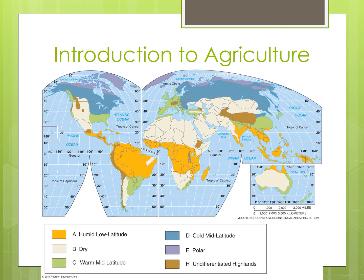Climates vary considerably across the planet, generally changing as distance from the equator increases. As latitudes increase, climate zones often change, which affects the average temperature and precipitation, leading to different agricultural activities.